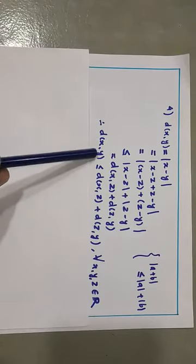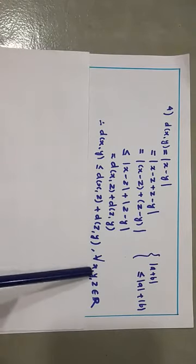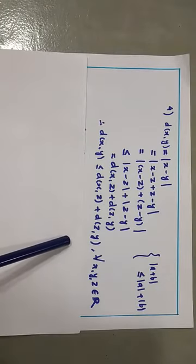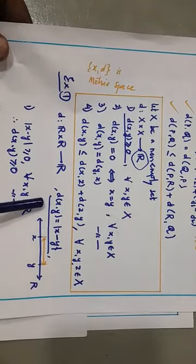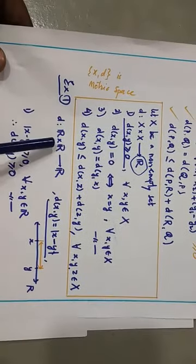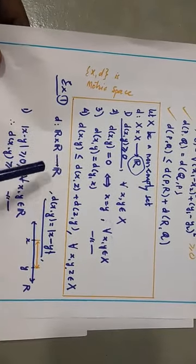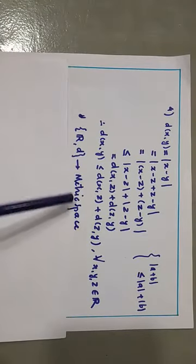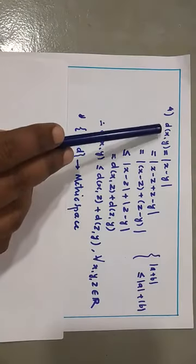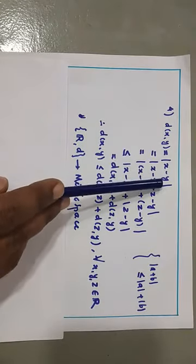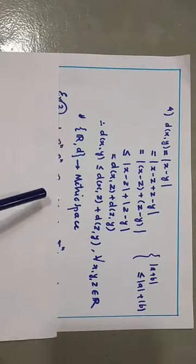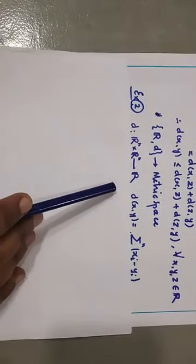So we get D(x,y) ≤ D(x,z) + D(z,y) for all x, y, z ∈ ℝ. The given function D(x,y) = |x − y| satisfies all four conditions, so it is a metric, and ℝ with this metric is a metric space — written as (ℝ, D). This distance D(x,y) = |x − y| is also known as the usual metric on ℝ. Let us come to the second example of a metric.